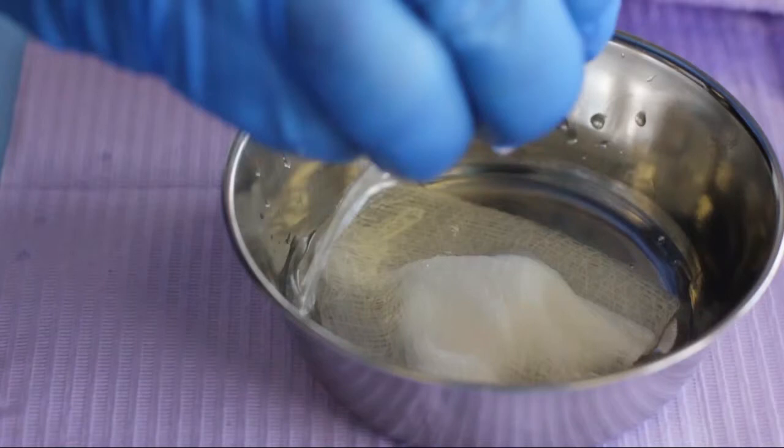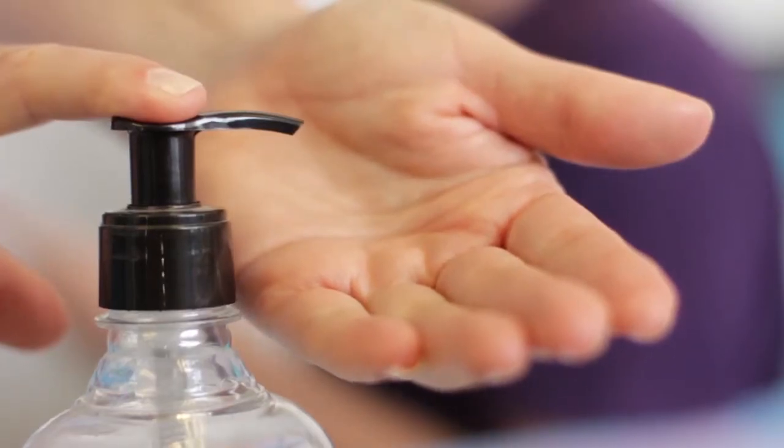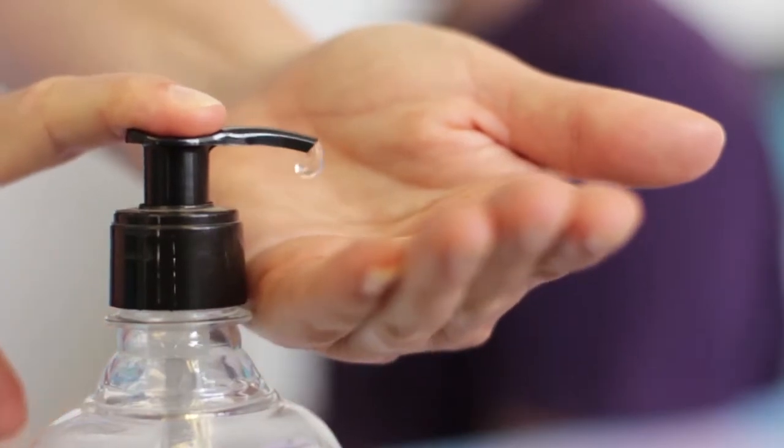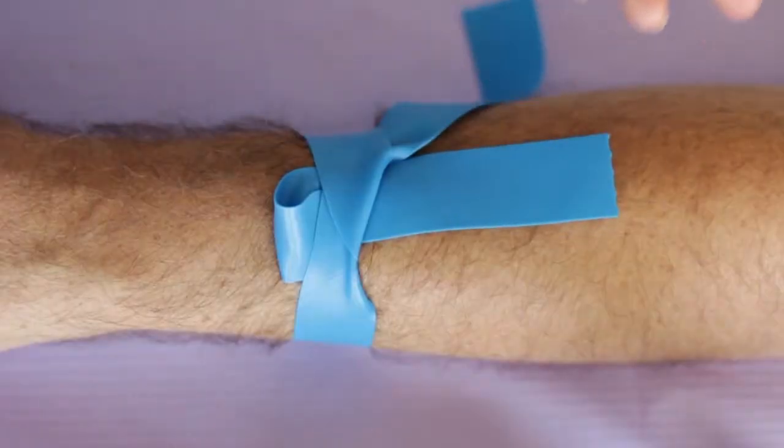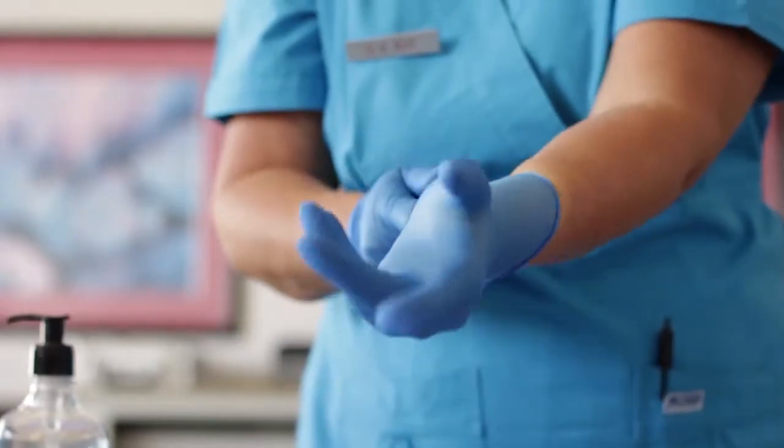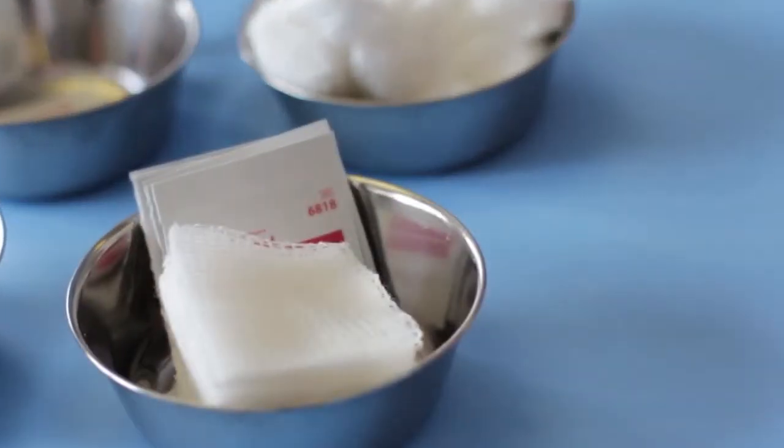You will need the following items: antiseptic soap for hand washing or alcohol hand rub, a clean work surface cover, a tourniquet, clean gloves, and alcohol prep swabs.